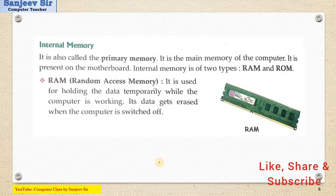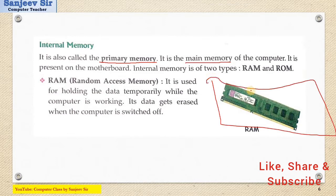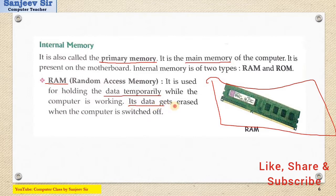Now we go for internal memory. The primary memory in a computer is known as internal memory — this is the main memory of the computer, present in the motherboard. You can see the figure here. RAM stands for Random Access Memory. It is used for holding data temporarily. Whatever information we are getting, the data is first processed and stored temporarily. After processing, the result is displayed and then data is erased. That's why RAM is called primary memory — data gets erased when the computer is switched off.